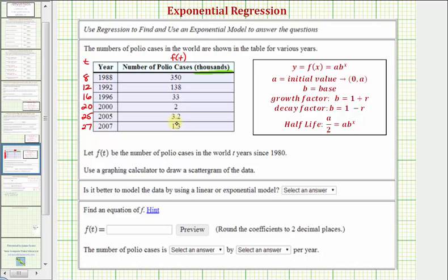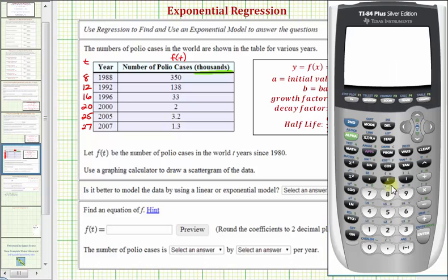So now we want to enter the data into the calculator. I've already done this to save time. To enter the data, we press stat and then enter. L1 contains the t values. L2 contains the number of polio cases.